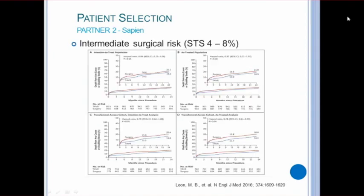The second trial for TAVR, the PARTNER-2, again using the Sapien valve, included 2,000 patients who were intermediate surgical risk candidates. Looking at two-year outcomes, SAVR, or surgical AVR, had fewer major vascular complications and paravalvular leaks. TAVRs, on the other hand, had larger aortic valve areas, lower rates of acute kidney injury, severe bleeding, new-onset AFib, and shorter stays in the ICU. Transfemoral TAVR had a lower rate of death or disabling stroke than SAVR. The trial concluded that TAVR was found to be non-inferior to surgical AVR.